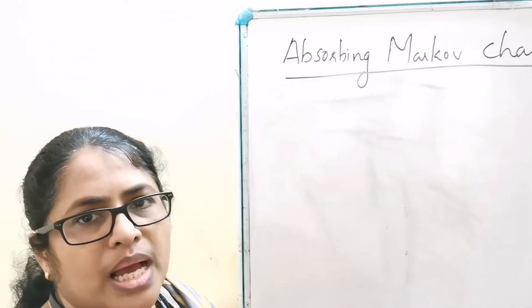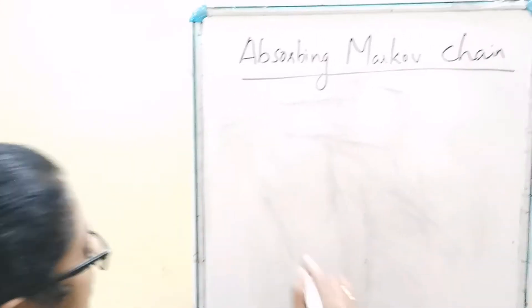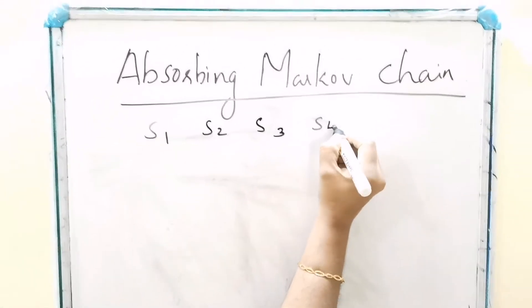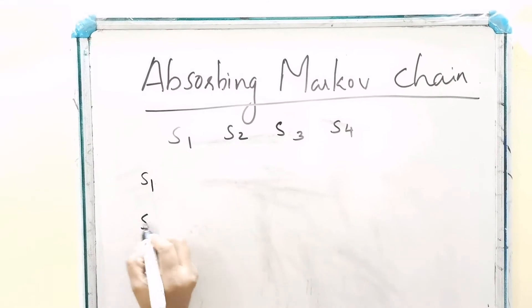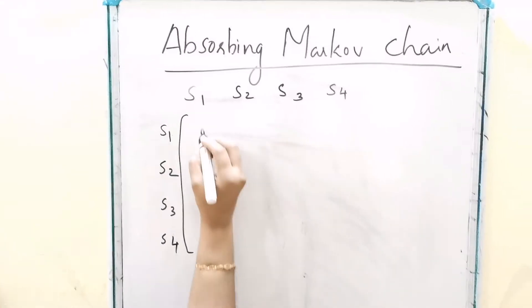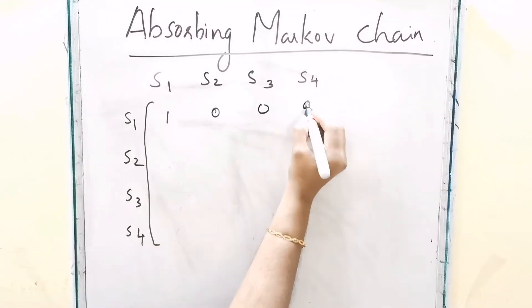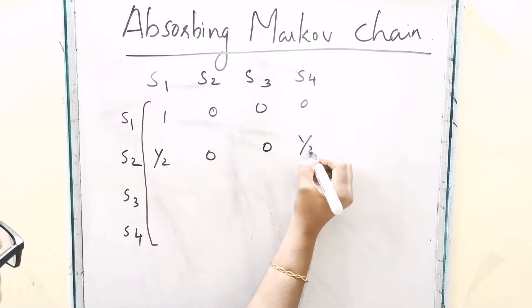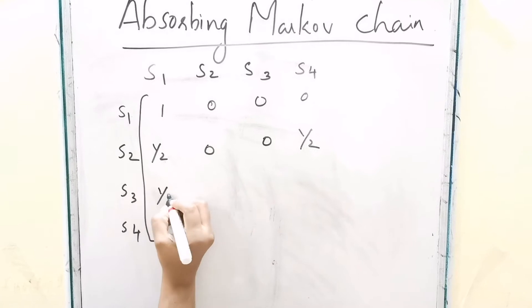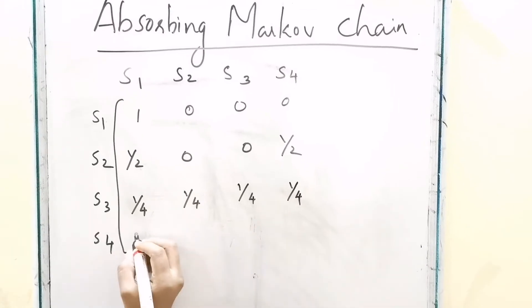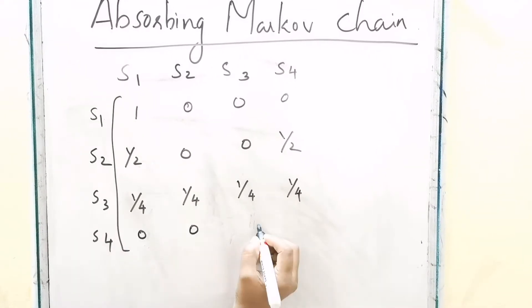Check whether the given matrix is from an absorbing Markov chain. We have states S1, S2, S3, S4. The transition matrix is: S1 row: 1, 0, 0, 0. S2 row: 1/2, 0, 0, 1/2. S3 row: 1/4, 1/4, 1/4, 1/4. S4 row: 0, 0, 0, 1.